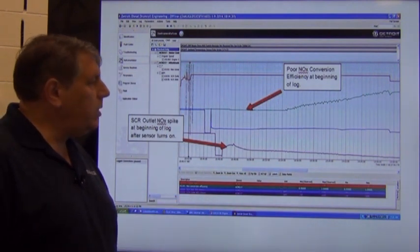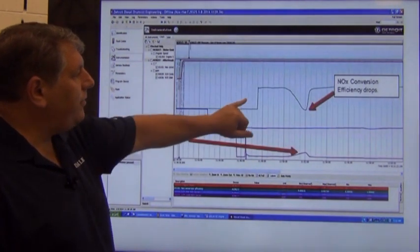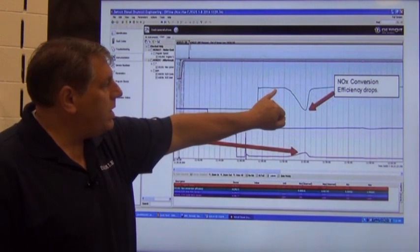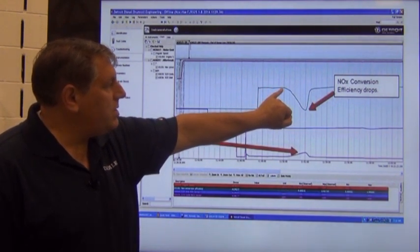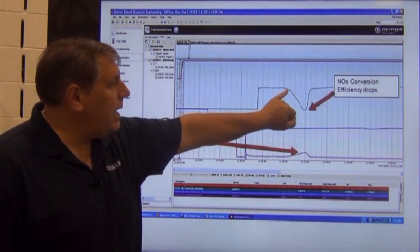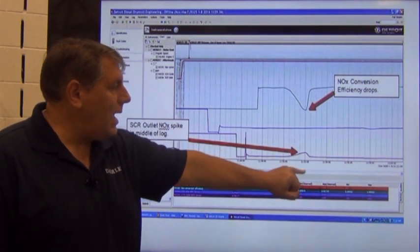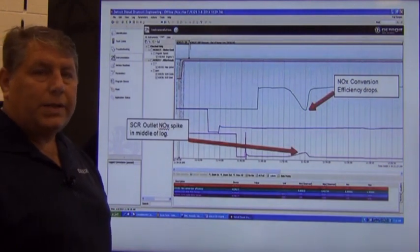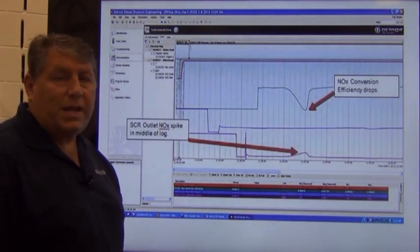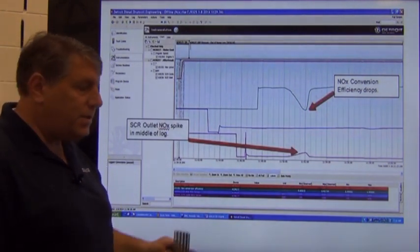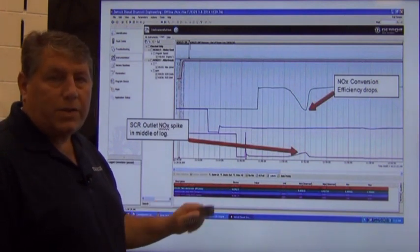There's another similar log file, but slightly different. You look at the parked region and the NOx efficiency actually starts out pretty good. Then as it warms up, it heats up and then it drops off. And then again, you get that outlet NOx sensor that spikes. This is an indicator you have excessive DEF dosing in the system and you'd want to install the service awning.